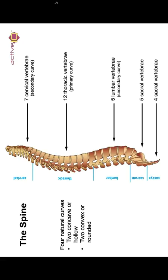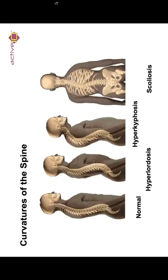There should be four natural curves — two concave or hollow, and two convex or rounded. These are the types of curvatures of the spine that you may see with clients or with anyone that you associate yourself with. You've got normal curvature of the spine, hyperlordosis which is the lower part of the spine, hyperkyphosis which is the upper part of the spine, and then scoliosis which is like an S shape.